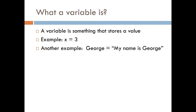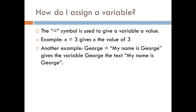Let's go with what a variable is. A variable is anything that stores a value. Examples on the slide: x equals 3, George equals 'my name is George.' Anytime you see in a script where a value is equal to something, that usually tells you that's a variable.